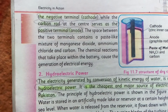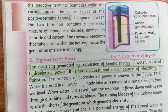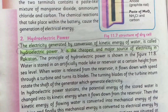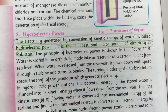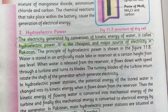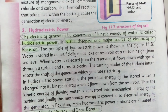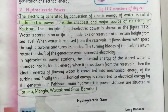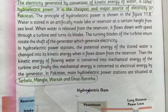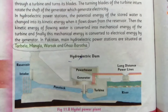In a dry cell, the carbon rod is the positive terminal and works as an anode. Hydroelectric power is the electricity generated by the conversion of kinetic energy of water. It is the cheapest and major source of electricity in Pakistan. Major power stations in Pakistan include Tarbela, Mangla, Warsak, and Ghazi Barotha.